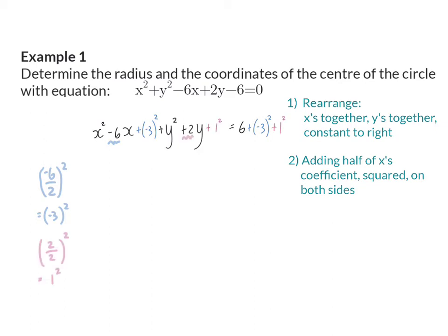This process now ensures that our first three terms will factorize into a bracket squared, and the same goes for our second three terms factorizing into a bracket squared.